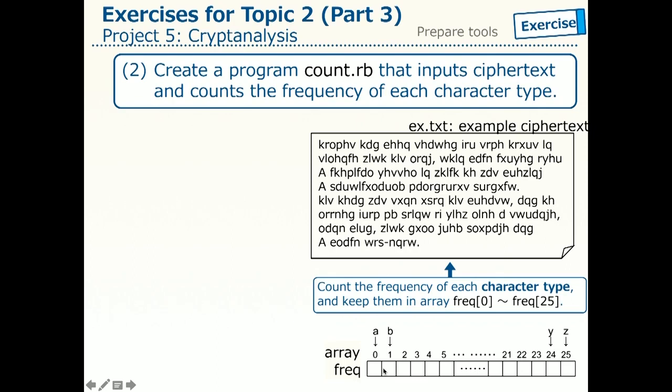So, the array FREQ is like this. For example, FREQ 0 keeps the number of occurrences of the letter A, and so on, and then FREQ 25 keeps the occurrences of the letter Z in the ciphertext. What we want to create is a program computing such an array.